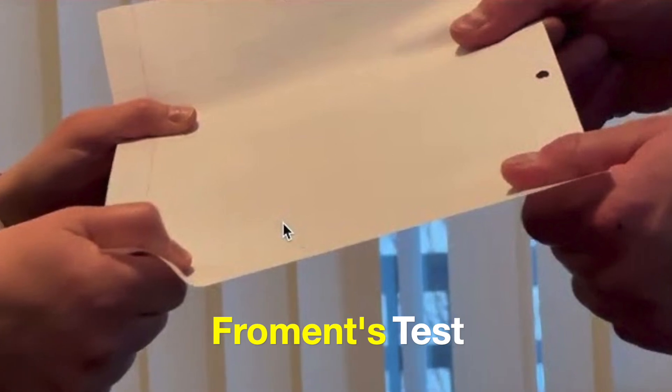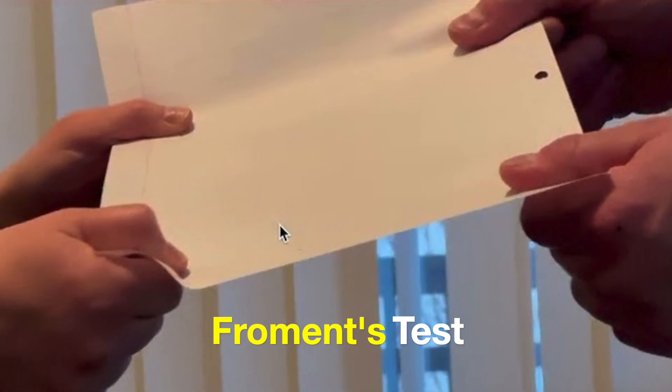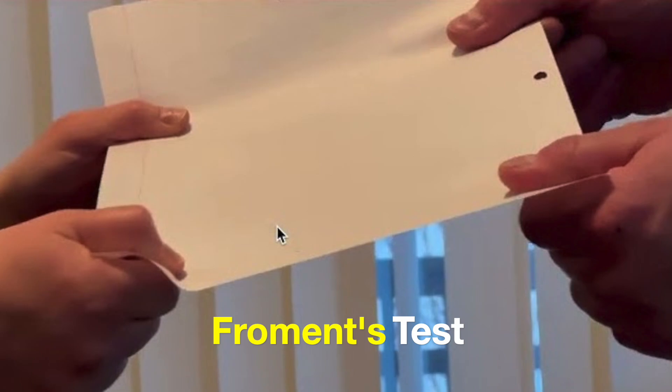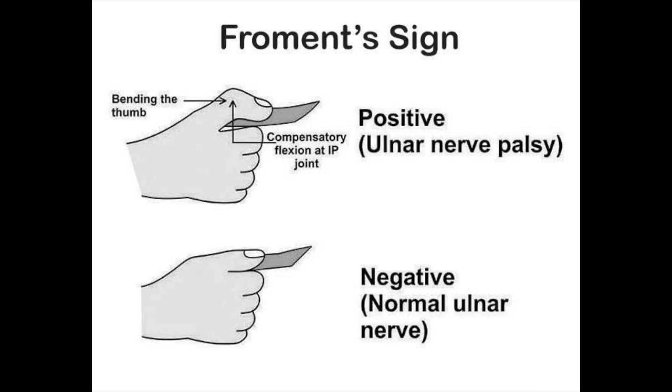When you pull it, you'll find that if the person is suffering from Guyon's canal syndrome, the paper slips out from the affected hand. To prevent that embarrassment or slippage of the paper, he will simply flex the thumb. That's a positive sign. To prevent the slippage of the paper card, there's compensatory flexion at the IP joint, and that's the bending of the thumb being done by flexor pollicis longus assisted by flexor pollicis brevis.